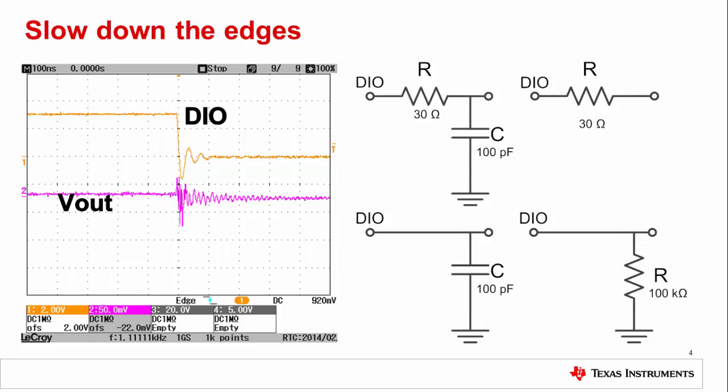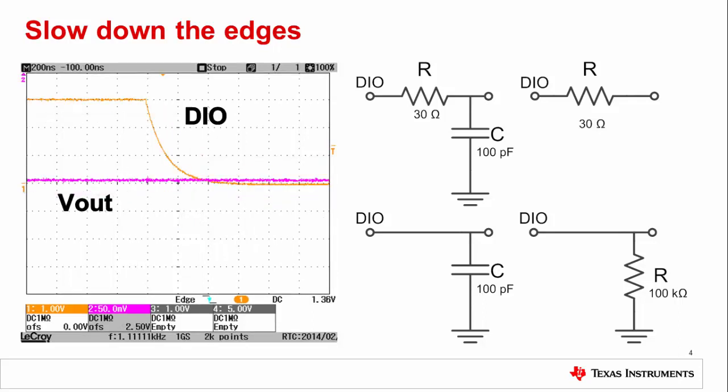Other than layout, the major source of digital feed-through will be fast digital edges. The faster the edges, the more prominently they feed through the output. You can use an RC filter to slow down the signals, or just an R to limit the current injection into the pin. These solutions will improve digital feed-through significantly.